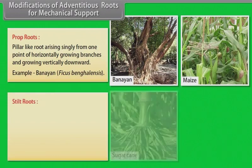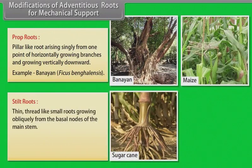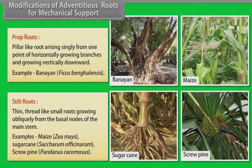Stilt roots: Thin, thread-like small roots growing obliquely from the basal nodes of the main stem. Examples: maize, sugarcane, screw pine.